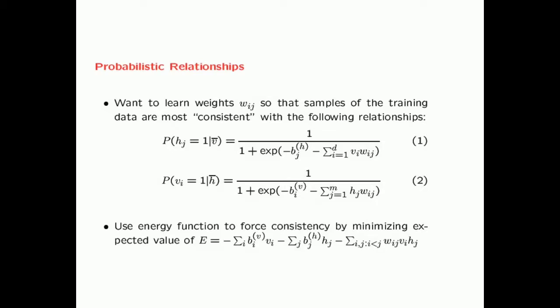The hidden states and visible states depend on one another through the weight function. The probability that hidden state H_J is one is given by a sigmoid function: sigmoid of B_JH plus the sum over I of V_I times W_IJ. Note that the value within the exponent is essentially a linear transformation similar to what you use in a conventional neural network—you apply a linear transformation and then a sigmoid activation. The key difference is that here you use the sigmoid to sample, whereas in a conventional neural network you use it to set a fractional value.